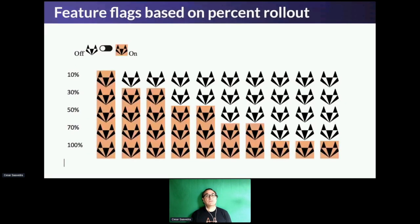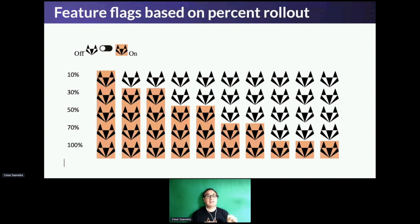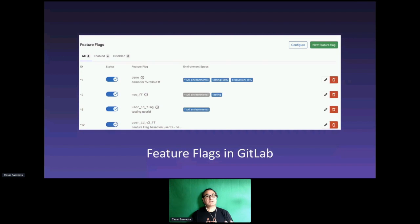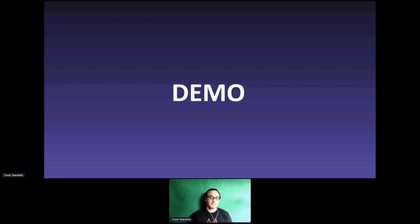Within GitLab, one feature flag rollout strategy is based on percent rollout — you roll out the feature to a small segment of users and as you feel more comfortable, increase it all the way to 100%. Let's jump into the demo.